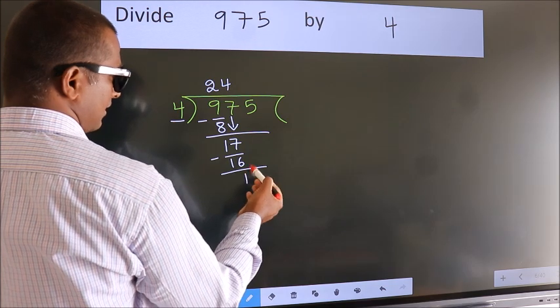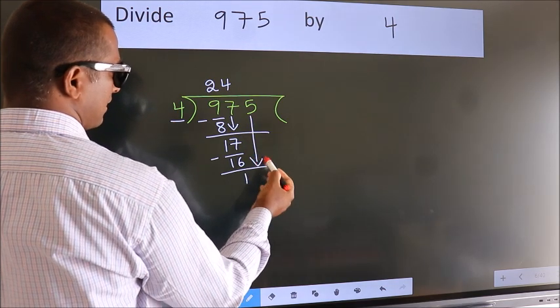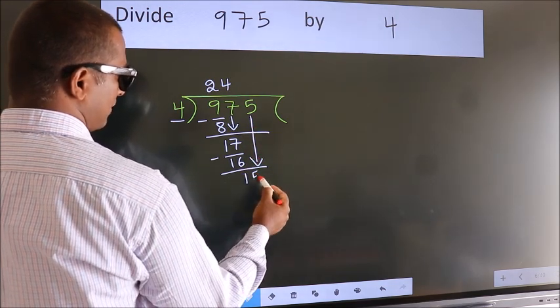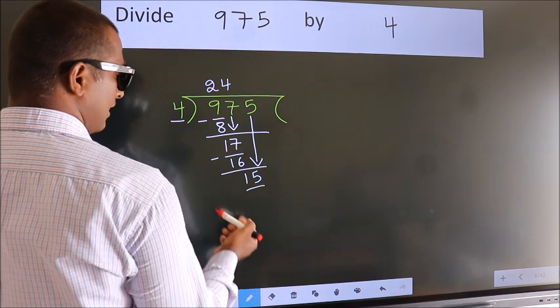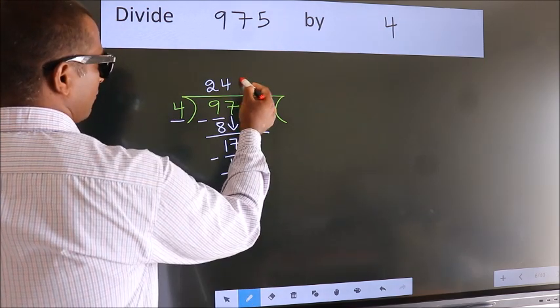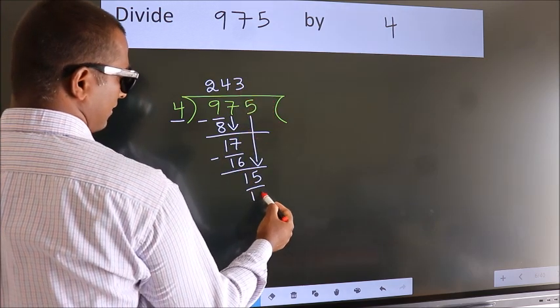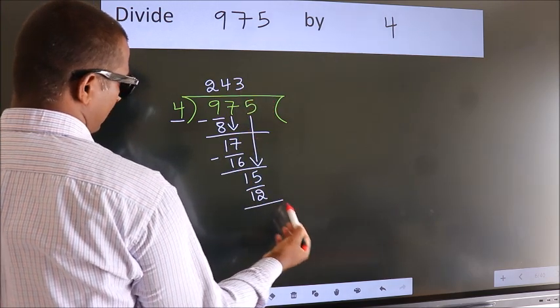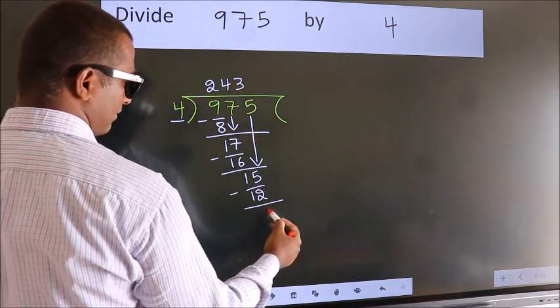After this, bring down the beside number. 5 down, so 15. A number close to 15 in 4 table is 4 threes, 12. Now we subtract. We get 3.